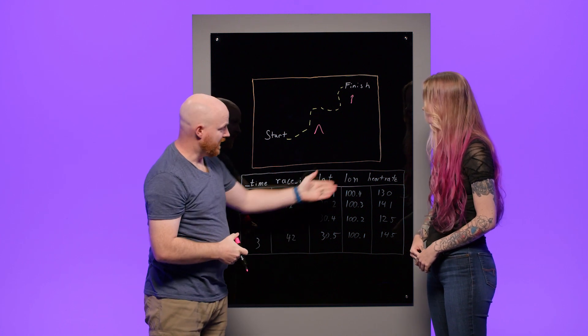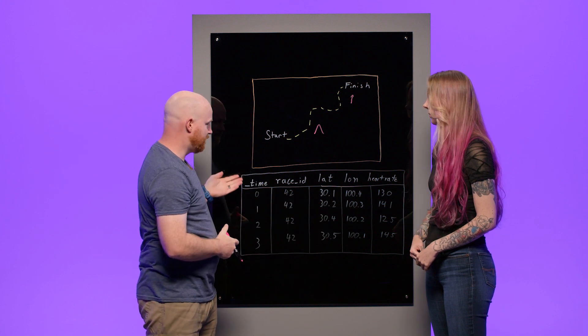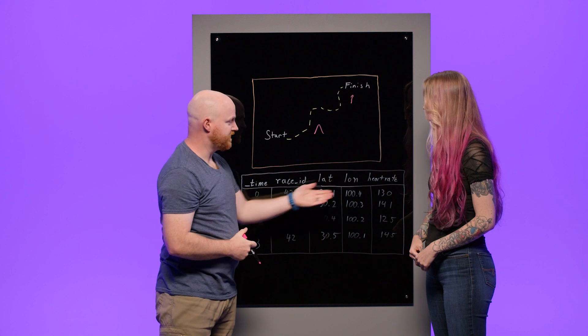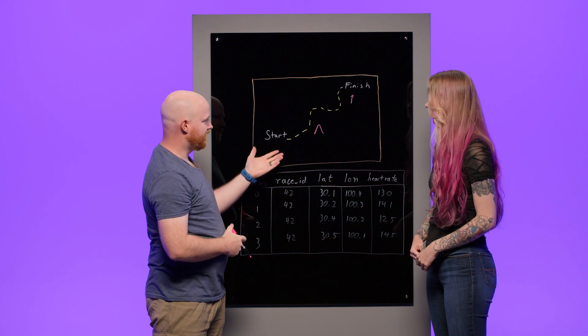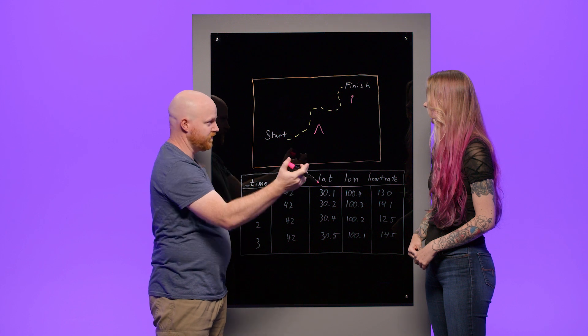We can see that we have our heart rate data along with our location data and our time data. By having the time element, we can connect all these bits of data together to look at the race in its whole picture, understand it, and make decisions about what to do in the future.